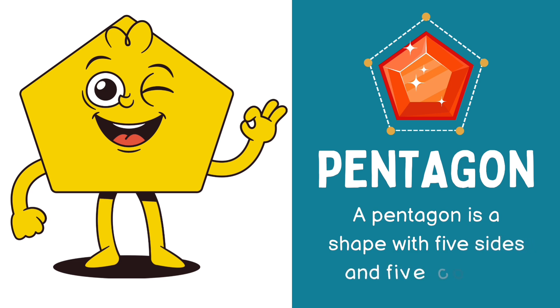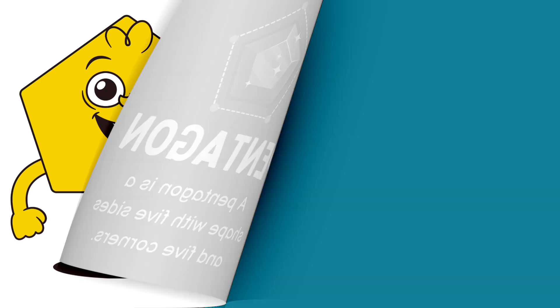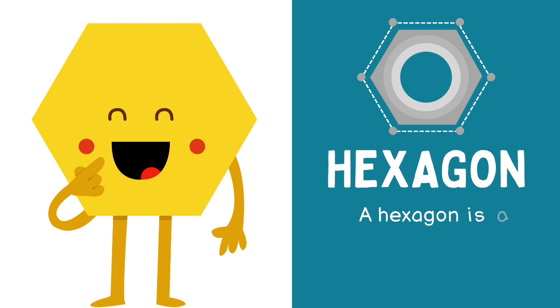Pentagon: A shape with five sides and five corners. Hexagon: A shape with six sides and six corners.